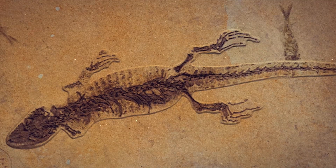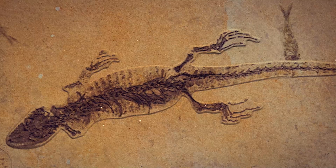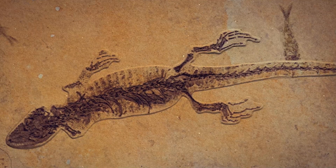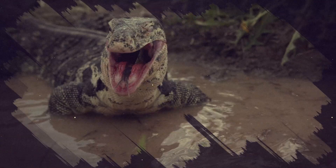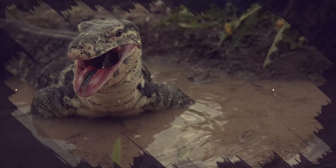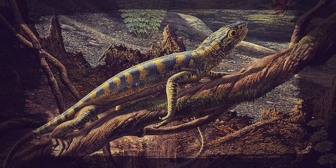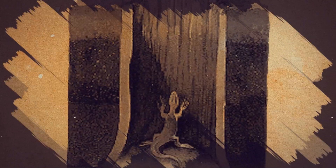One of the most significant developments in animal evolution during the Carboniferous was the appearance of the first reptiles. These early reptiles, found fossilized in tree stumps, were small, agile, and lizard-like. The evolution of reptiles marked a major step in the colonization of land by vertebrates, as they were the first fully terrestrial vertebrates that could reproduce without returning to the water. The earliest known reptile is Hylonomus, which lived in what is now Nova Scotia, Canada. Fossils of this tiny creature, less than 20 cm long, have been found in the remains of hollow lycopod tree stumps from the Lower Pennsylvanian Period, preserved because they became trapped in the cavities left by decaying trees.